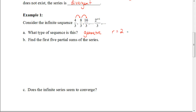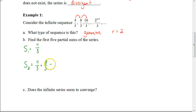The question asks us to find the first five partial sums of the series. S sub one is the sum of the first term, which is just four-thirds. S sub two is the sum of the first two terms: four-thirds plus eight-thirds equals twelve-thirds, which reduces to four. So the first partial sum is four-thirds and the second is four.